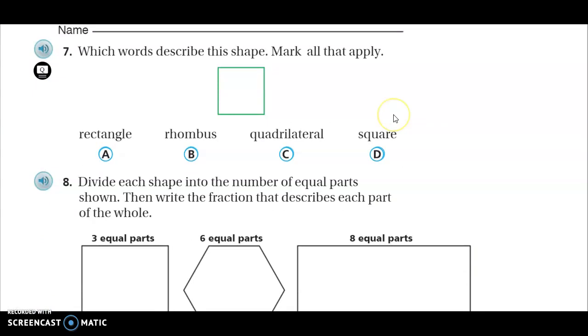Number seven. Which words describe this shape? Mark all that apply. Rectangle, rhombus, quadrilateral, square. Mark all that apply. Big clue telling them that there's more than one answer. Press pause and work.